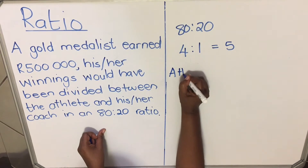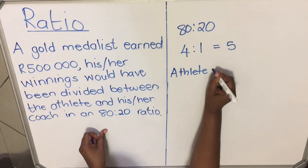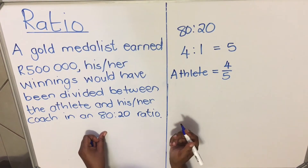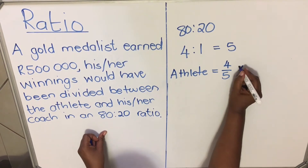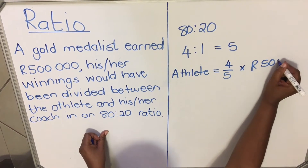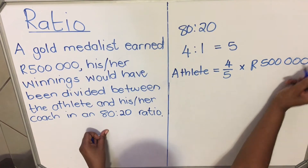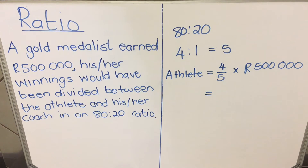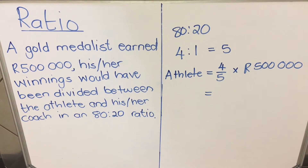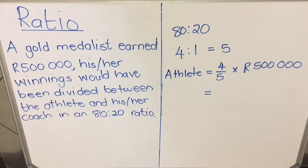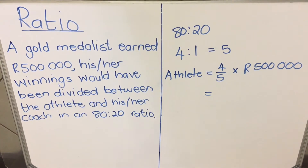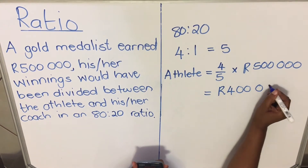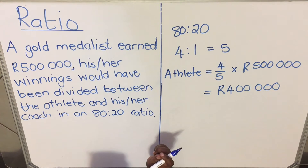For the athlete's portion: the athlete gets 4 out of 5 portions, multiplied by the total amount of 500,000. Using a calculator, 4 out of 5 multiplied by 500,000 gives 400,000. So the athlete will get 400,000.